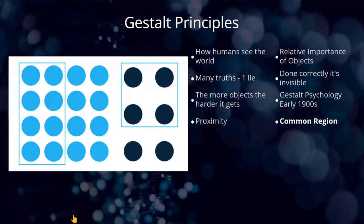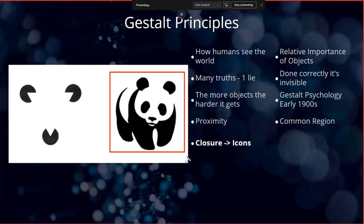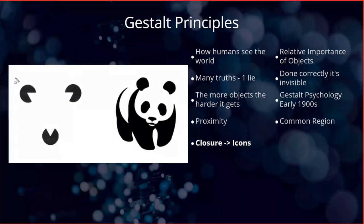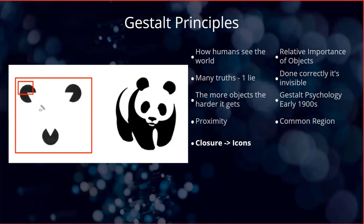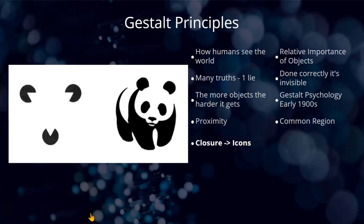We have another principle which is around closure, which I think is absolutely fascinating. Many people will see the panda associated with the World Wildlife Fund, and they'll also see a triangle sitting in the middle. But in fact, as you can see, there is no triangle — it's just a construct from the objects we can see. When we think about icons, that's exactly what's happening all the time. The mind is filling in the gaps, and that's why icons work well. Images get processed 60,000 times more quickly than text does.